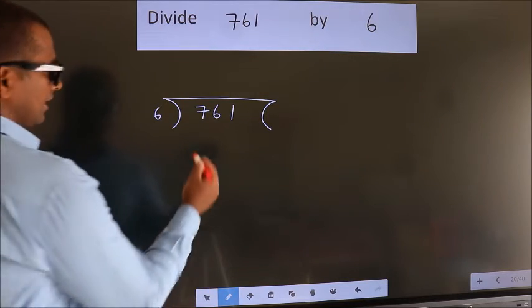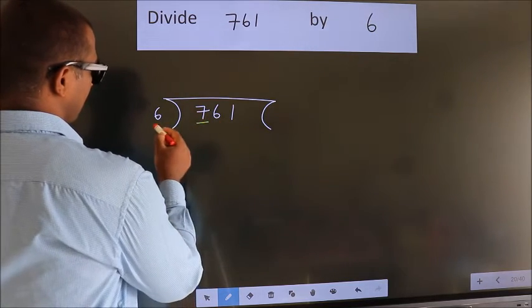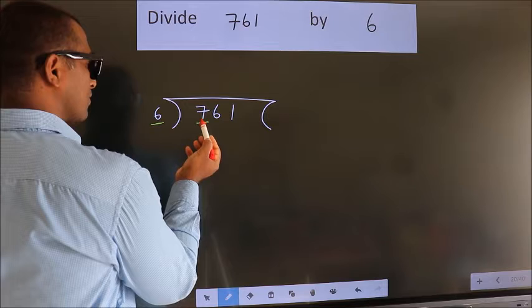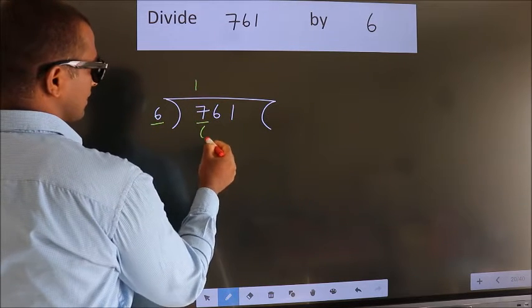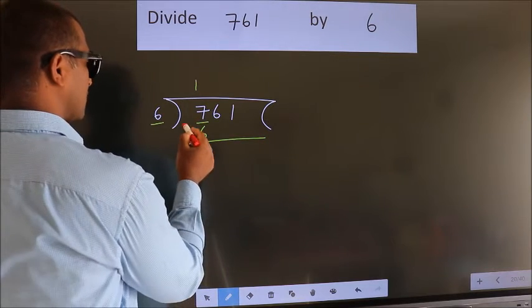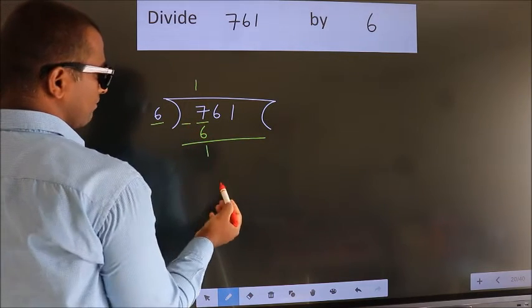Next. Here we have 7, here 6. A number close to 7 in 6 table is 6 ones, 6. Now we should subtract. We get 1.